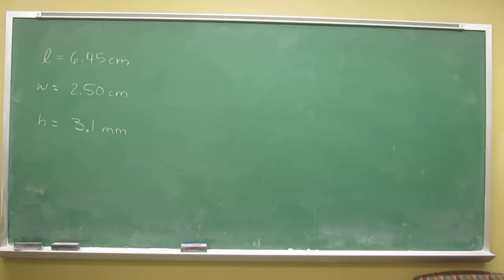There's a couple of things with this already. We need to use these to find the volume, but millimeters are a different unit than centimeters, so we're going to have to convert units. And this number only has two sig figs, so our volume and our density are only going to be allowed to have two sig figs.